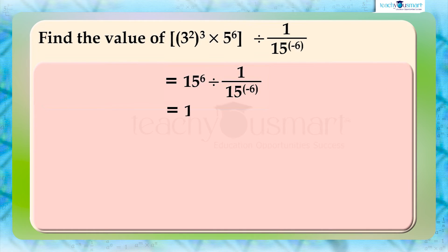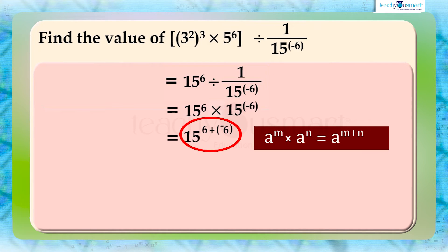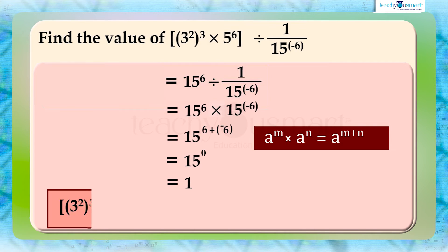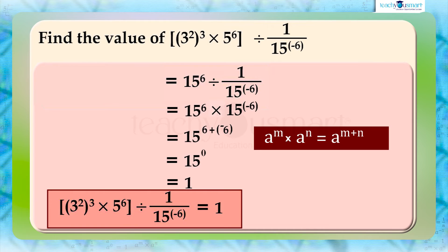This equals 15 raised to 6 multiplied by 15 raised to minus 6, which equals 15 raised to (6 plus minus 6), equals 15 raised to 0, equals 1. Therefore, 3 squared the whole cube multiplied by 5 raised to 6, divided by 1 by 15 raised to minus 6, equals 1.